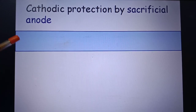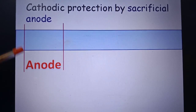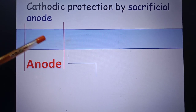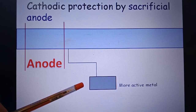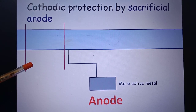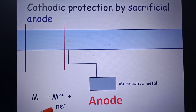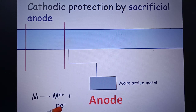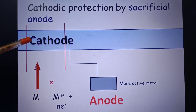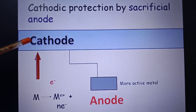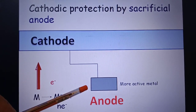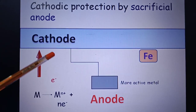Cathodic protection by sacrificial anode: this is the metal surface which you want to protect from corrosion. This area is acting as anode and will corrode. What we do is connect this metal to some metal which is more active than it. Now this more active metal will act as anode instead. Oxidation reactions will take place at this more active metal, generating electrons that flow toward the original metal, which now acts as cathode. So instead of the original metal, the more active metal corrodes, and we have protected the original metal by making it a cathode.